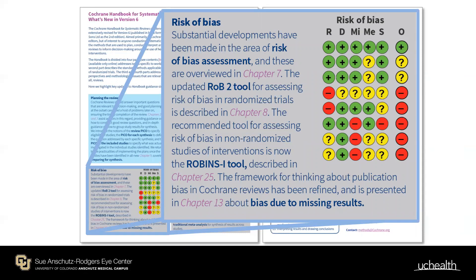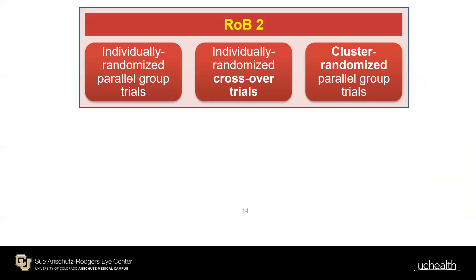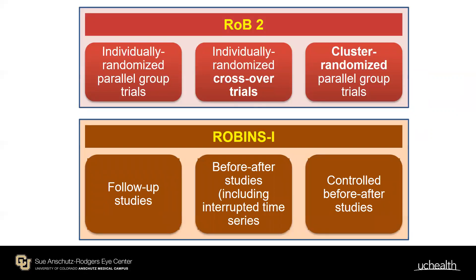The second major new element is the RoB2 risk of bias tool, and also ROBINS-I — the risk of bias tool for non-interventional studies assessing intervention effectiveness. There's also a new chapter on bias due to missing results. RoB2 will likely be challenging for many Cochrane authors because it represents a new causal inference framework. Both RoB2 and ROBINS-I are based on causal inference. Previously there was one tool adapted for different designs; now there are individual tools for parallel group, crossover, and cluster RCTs.